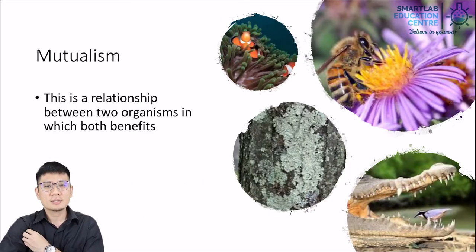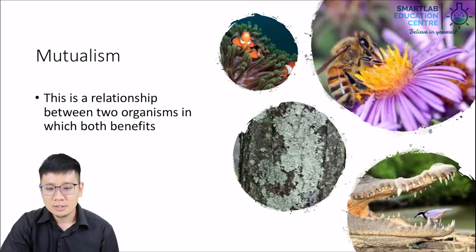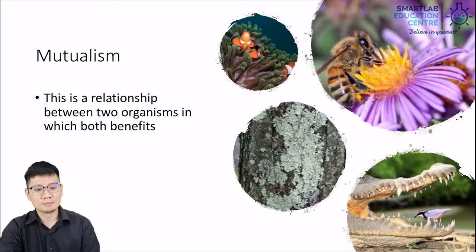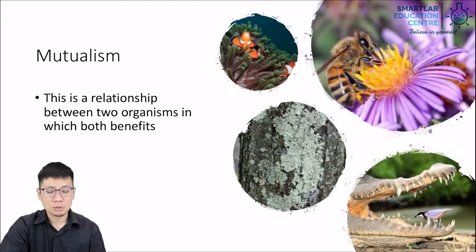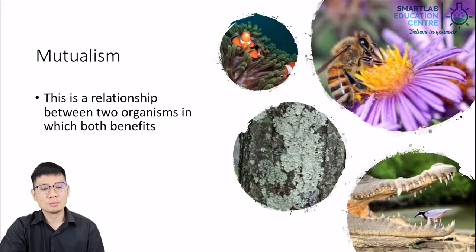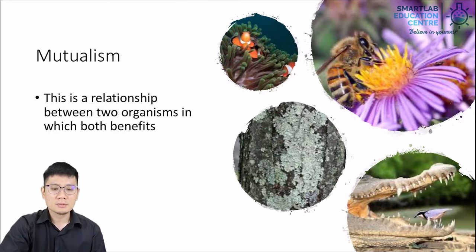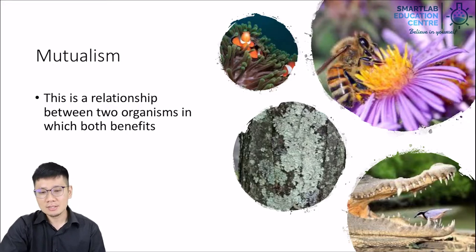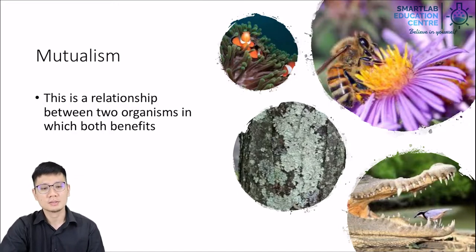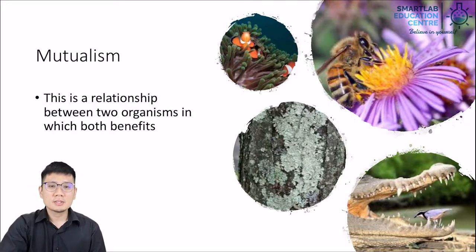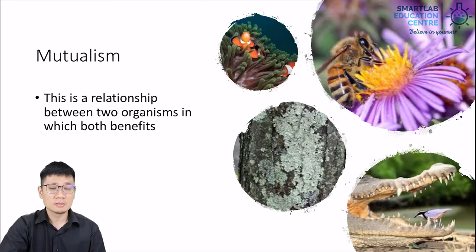Another type of relationship between organisms is mutualism. This is different from the word symbiosis. Mutualism refers to a relationship where both organisms benefit. Some people may still be using the older term symbiosis, but symbiosis is more like a word that describes any sort of relationship between organisms — mutualism is a specific type of symbiosis. In mutualism, two organisms cooperate somewhat, bringing benefit to each other, either consciously or unconsciously.